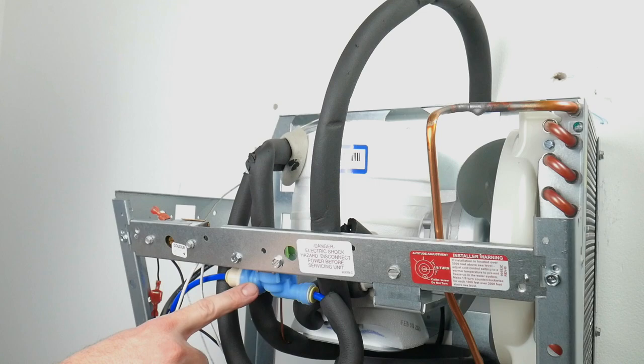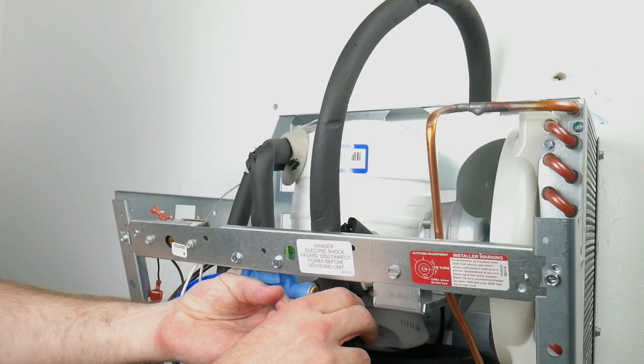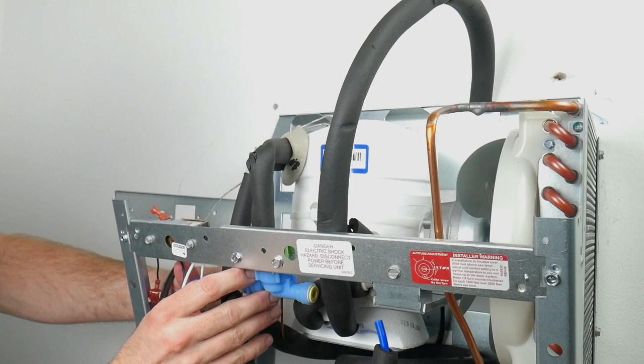Locate the solenoid on your drinking fountain and disconnect the supply and the outlet. This can be done by depressing the collet on the fitting and pulling out.